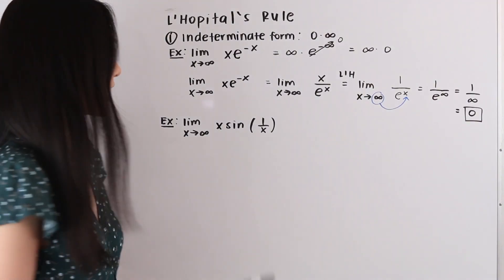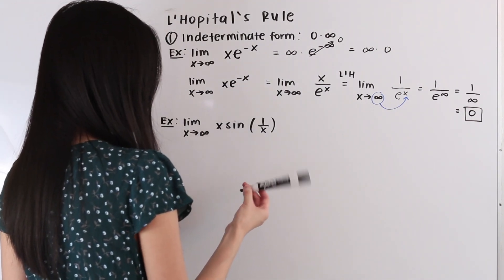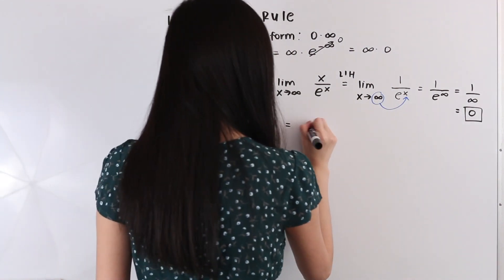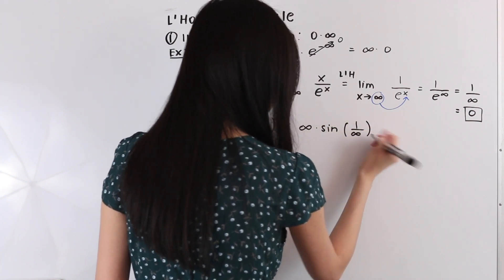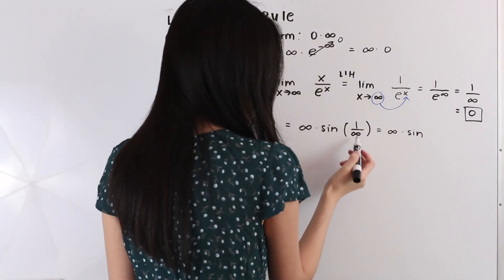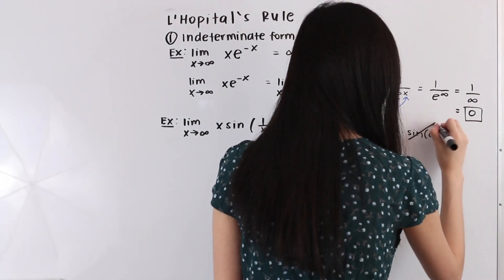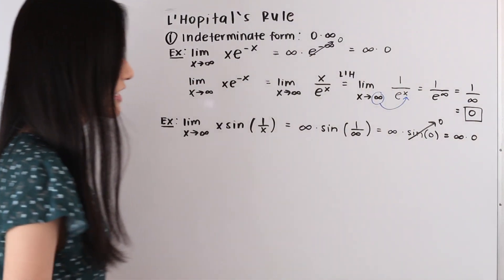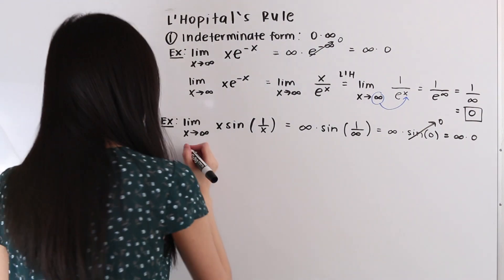In this next example we have the limit as x approaches infinity of x·sin(1/x). Plugging in infinity, we get infinity times sin(1/infinity). Since 1/infinity equals 0, this becomes infinity times sin(0), and sin(0) equals 0. So we end up with infinity times 0 again — an indeterminate form — which means we can use L'Hôpital's rule to evaluate this limit.